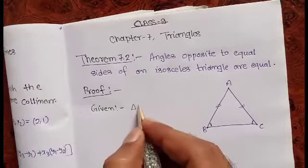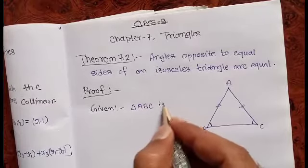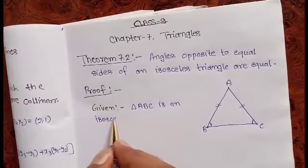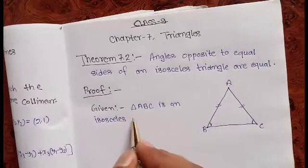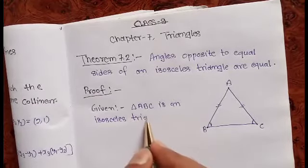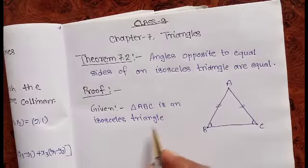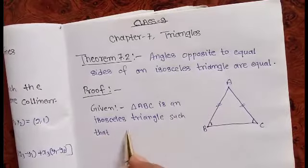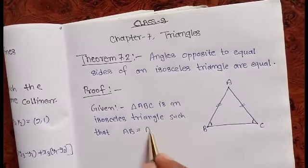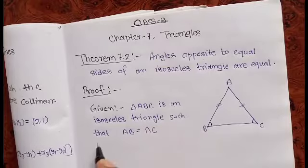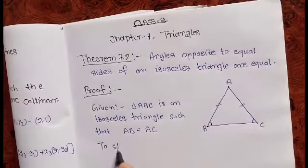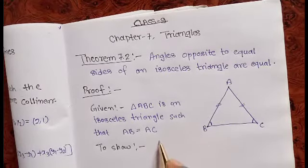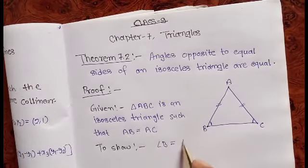Given: Triangle ABC is an isosceles triangle such that AB is equal to AC. To show: Angle B is equal to angle C.